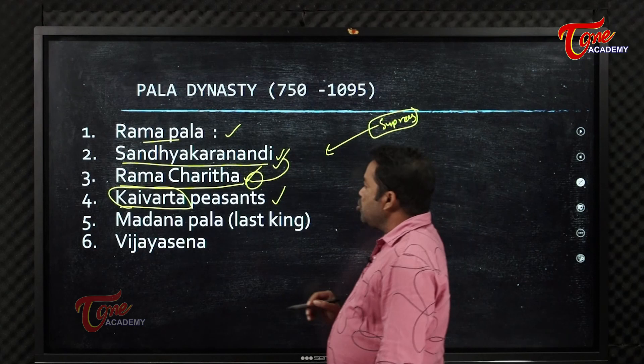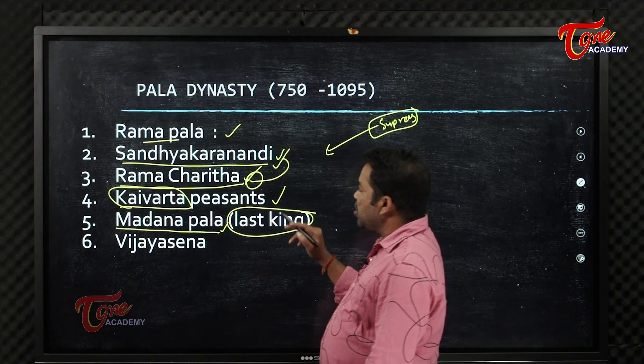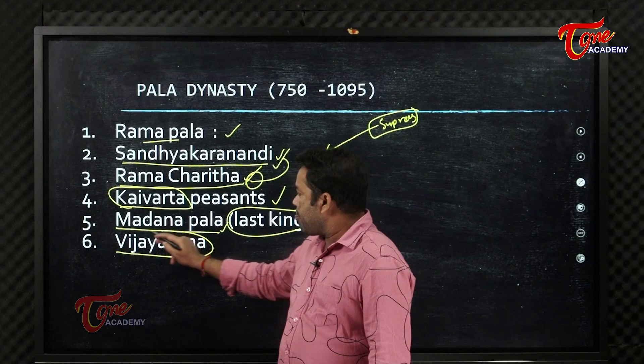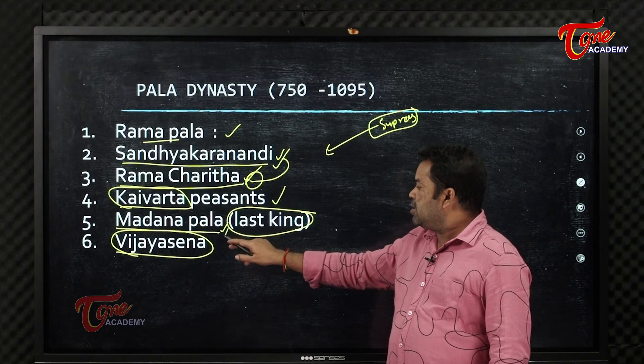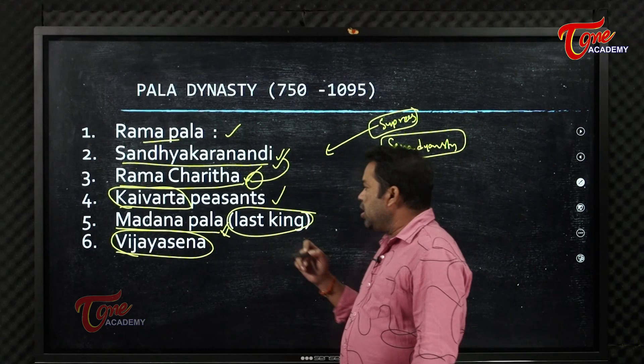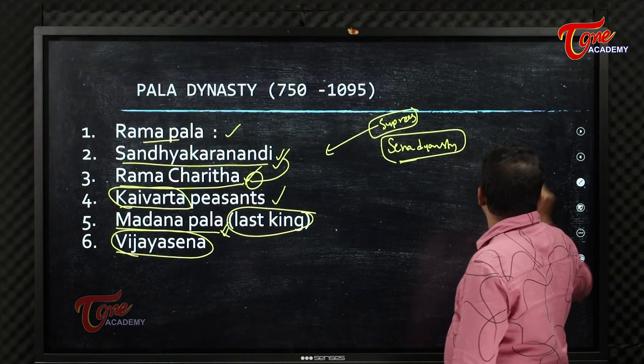The last ruler of the Pala dynasty was Madanapala. He was killed by his own officer Vijayasena, who then started the Sena dynasty. This is the story of the Pala dynasty.